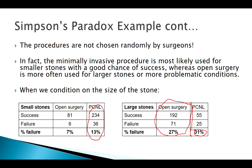Simpson's Paradox can pop up whenever there's a confounding or lurking variable. It's often caused in situations where subjects are not randomly assigned to groups and there are large sample size disparities — something we have to be careful about with contingency tables.